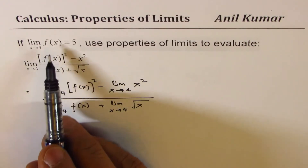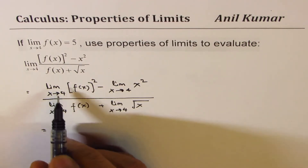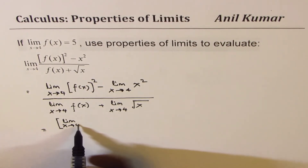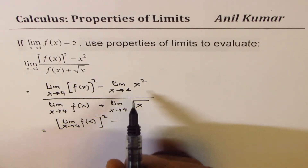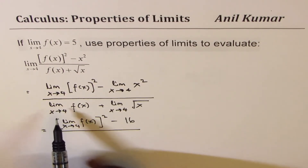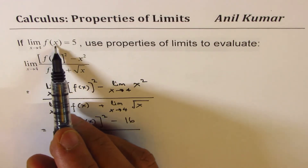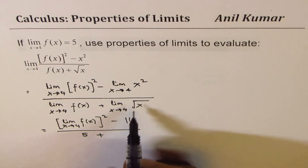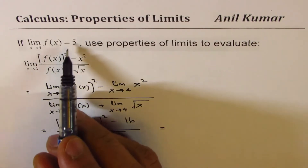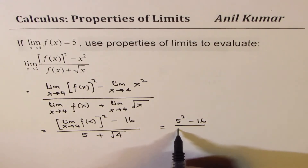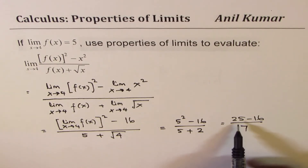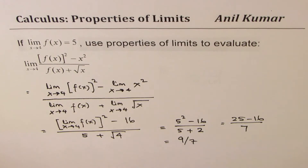Since the exponent applies to the function, we write this as: limit x approaches 4 for f(x), whole squared, minus 4 squared which is 16, over the limit of f(x) as x approaches 4 which is 5, plus the square root of 4. This gives us 5 squared minus 16, over 5 plus 2, which is 25 minus 16 over 7. So 9 over 7 is our result.